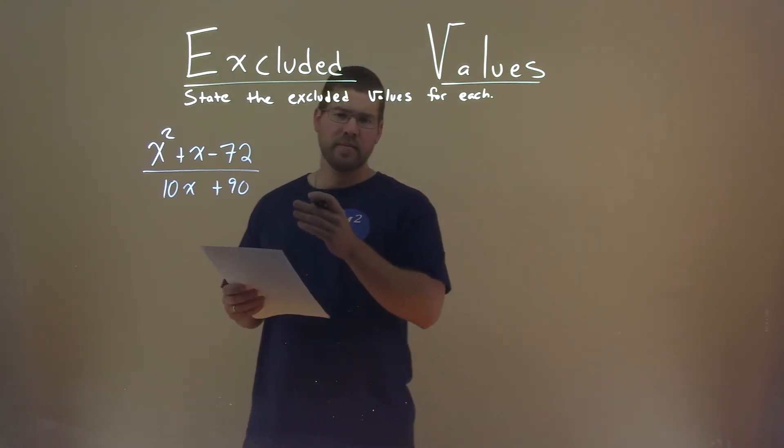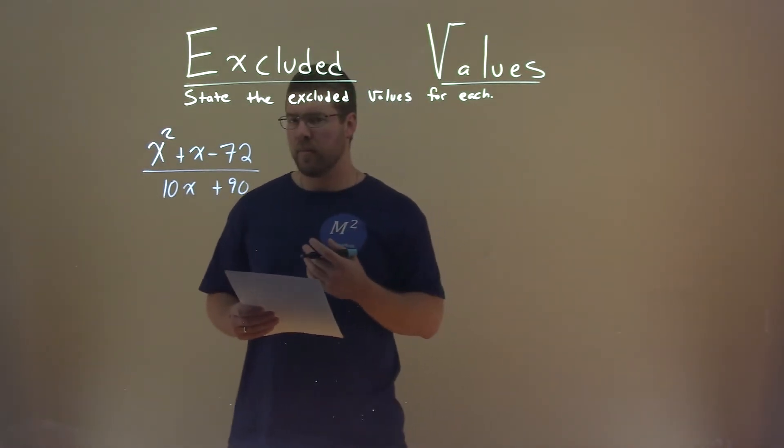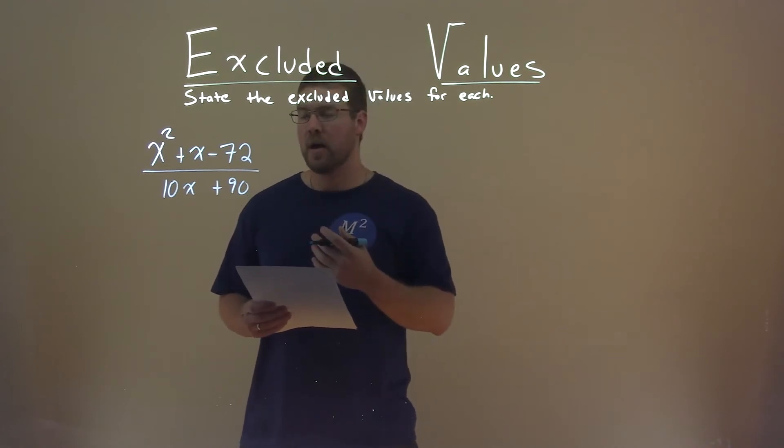Well, we're dividing here, or we have a rational function, right? And we know we cannot divide by zero. So our denominator, if it's equal to zero, that's where we're finding our excluded value.